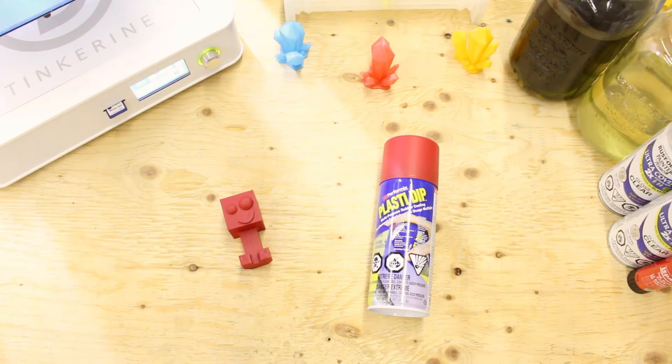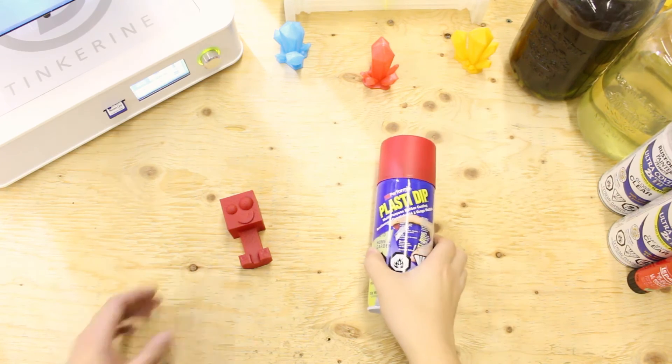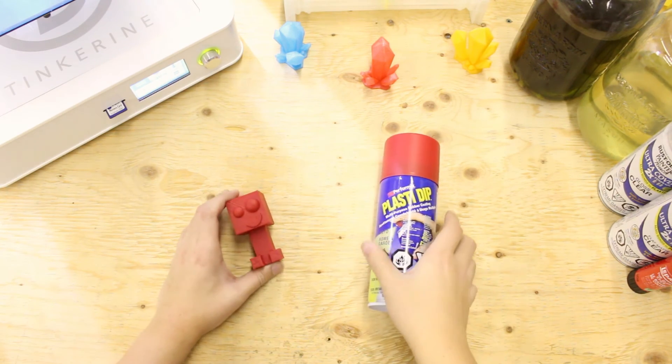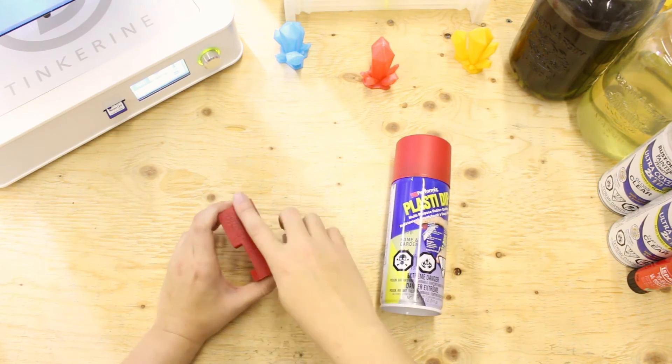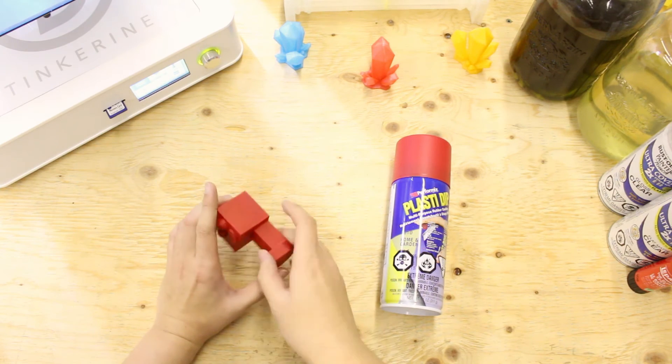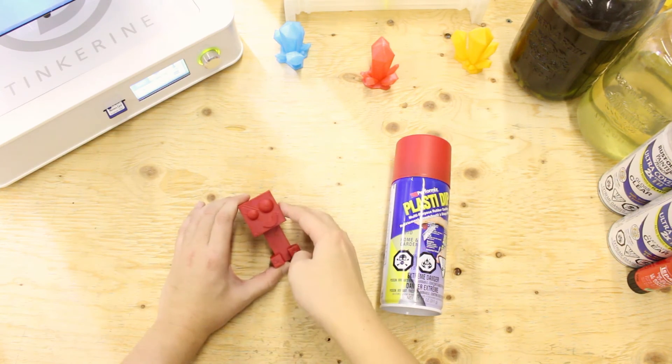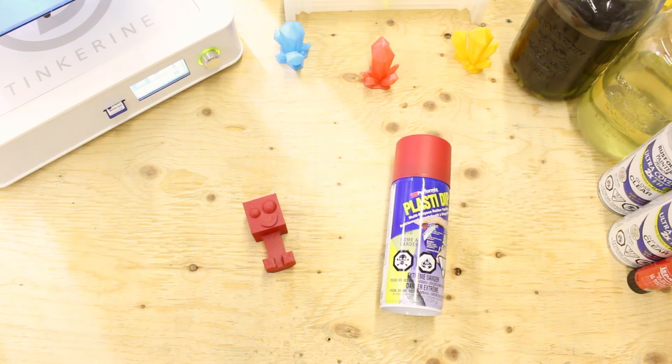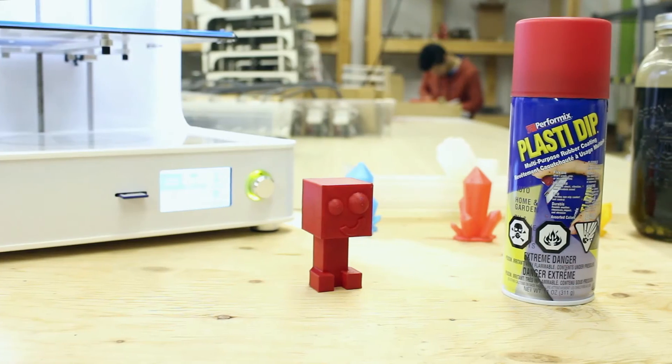Well there we have it! We post processed the PLA model with plastic dip and it turned out to be better than I expected. You just gotta spray it more evenly so we can avoid the blobs as we saw from the back. If you are using the print afterwards, the manufacturer advises to wait 4 hours before actually using it.